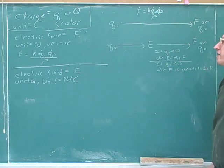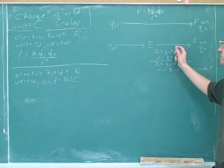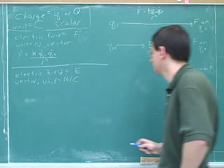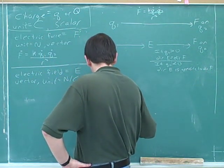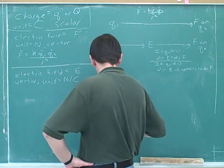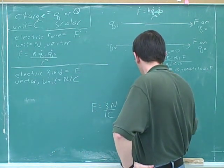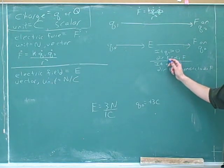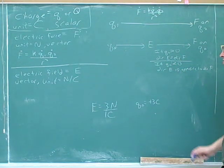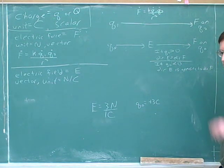What we're writing down here is a flowchart that you can refer to throughout the course — maybe later you'll want to put this on a separate piece of paper so it doesn't get lost. We memorize that by definition: when you have a positive test charge, the field and the force are in the same direction; when you have a negative test charge, the field and the force are in opposite directions.